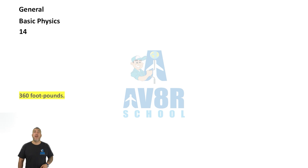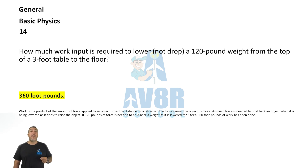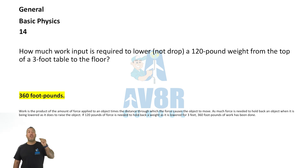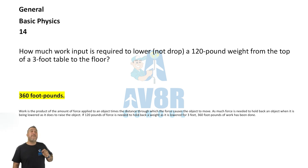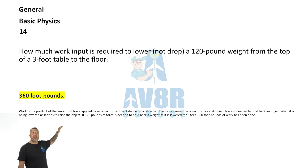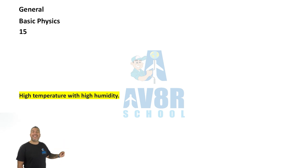Number 14. 360 foot-pounds. How much work is required to lower — not drop, lower — a 120-pound weight from the top of a three-foot table to the floor? You're going to require 360 foot-pounds.